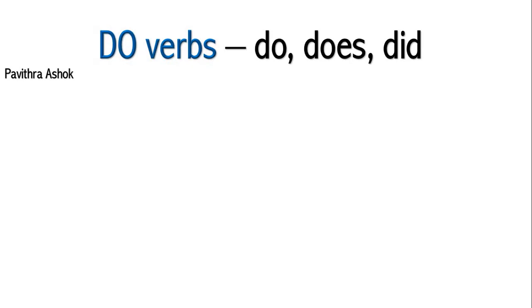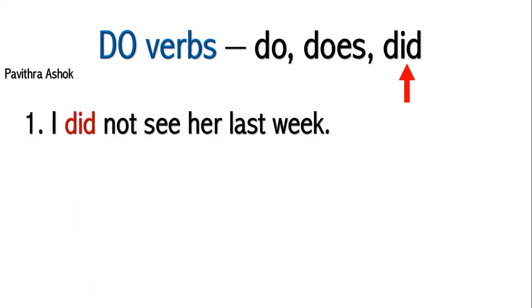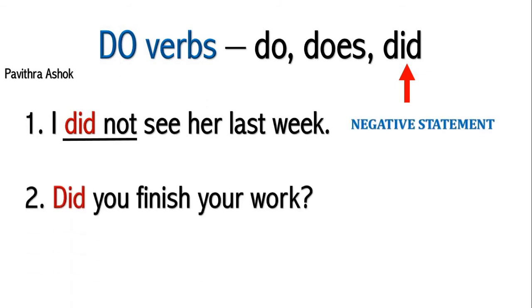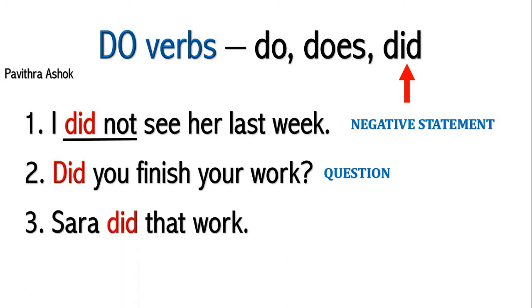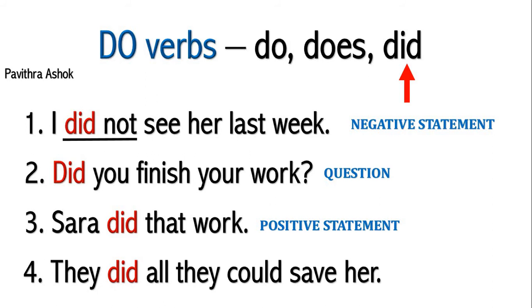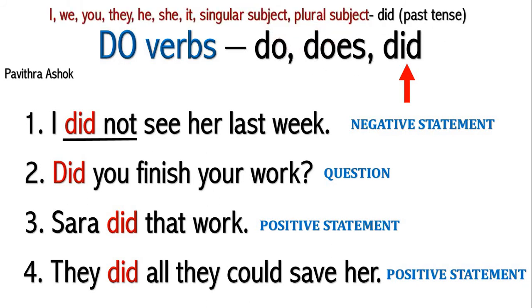Now we'll understand do verbs: 'did'. 'I did not see her last week.' — did not — it's a negative statement. 'Did you finish your work?' — it's a question. 'Sarah did that work.' — it's a positive statement. 'They did all they could to save her.' — again, it's a positive statement. We use 'did' for I, we, you, they, he, she, it — singular subject as well as plural subject — in past tense.